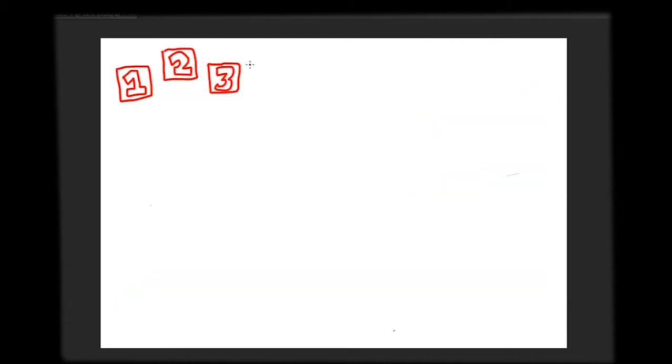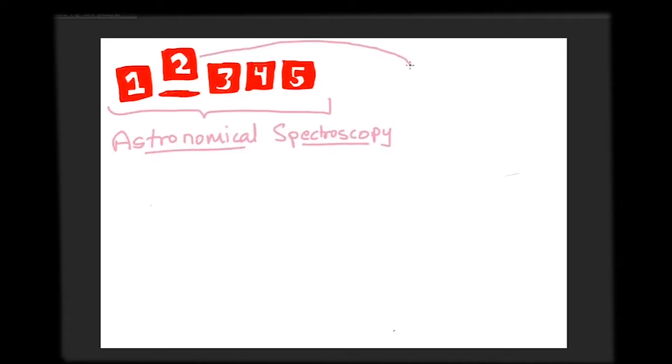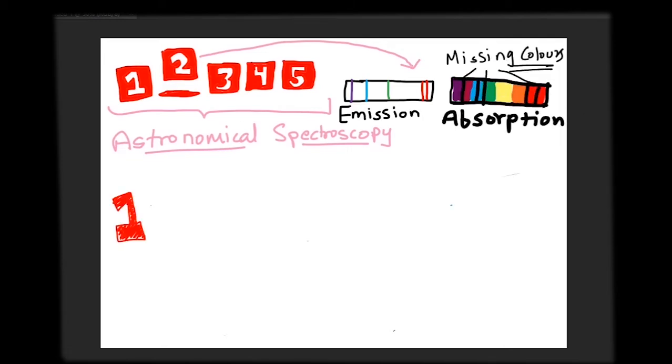This is the second video in the series on astronomical spectroscopy, where we will learn about emission spectrum and absorption spectrum. In case you haven't watched the first video on what are waves, spectrum, and spectroscopy, you may watch it on my channel.